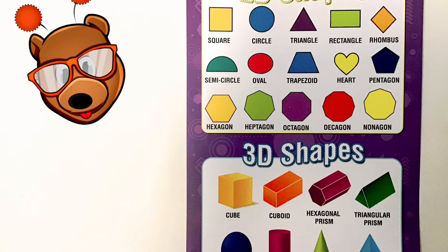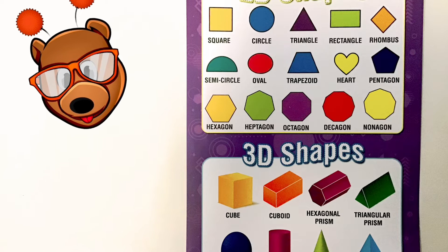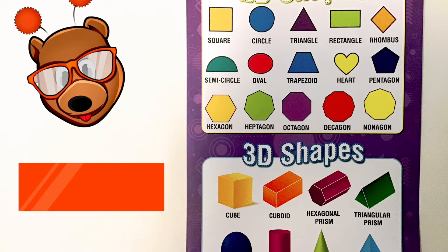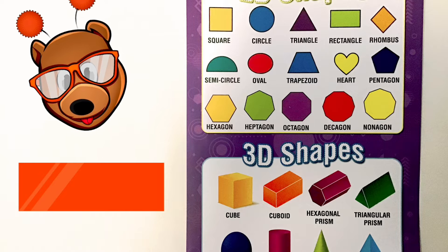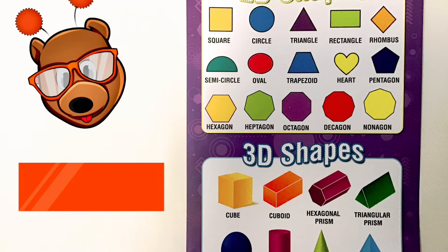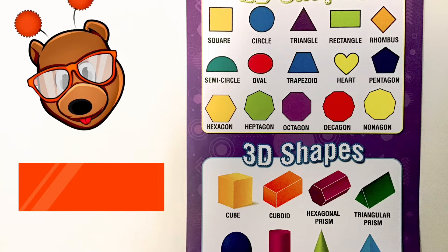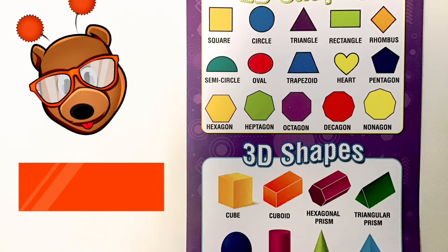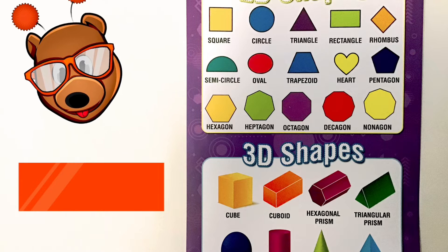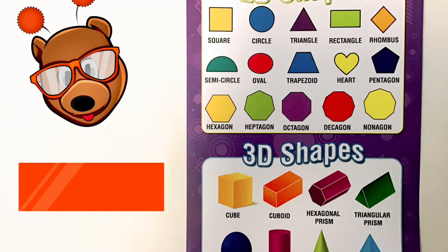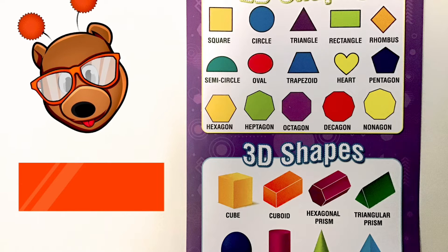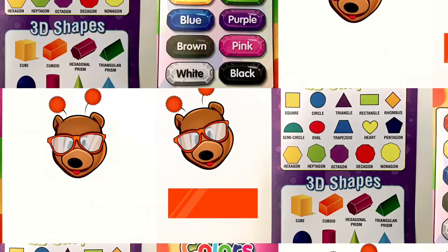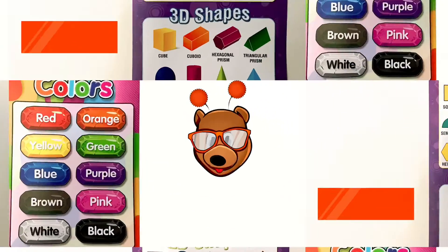All right, friends, now it is time for our shape of the week. Our shape of the week is a rectangle. A rectangle has two long sides and two short sides and four corners. Can you find a rectangle where you are?